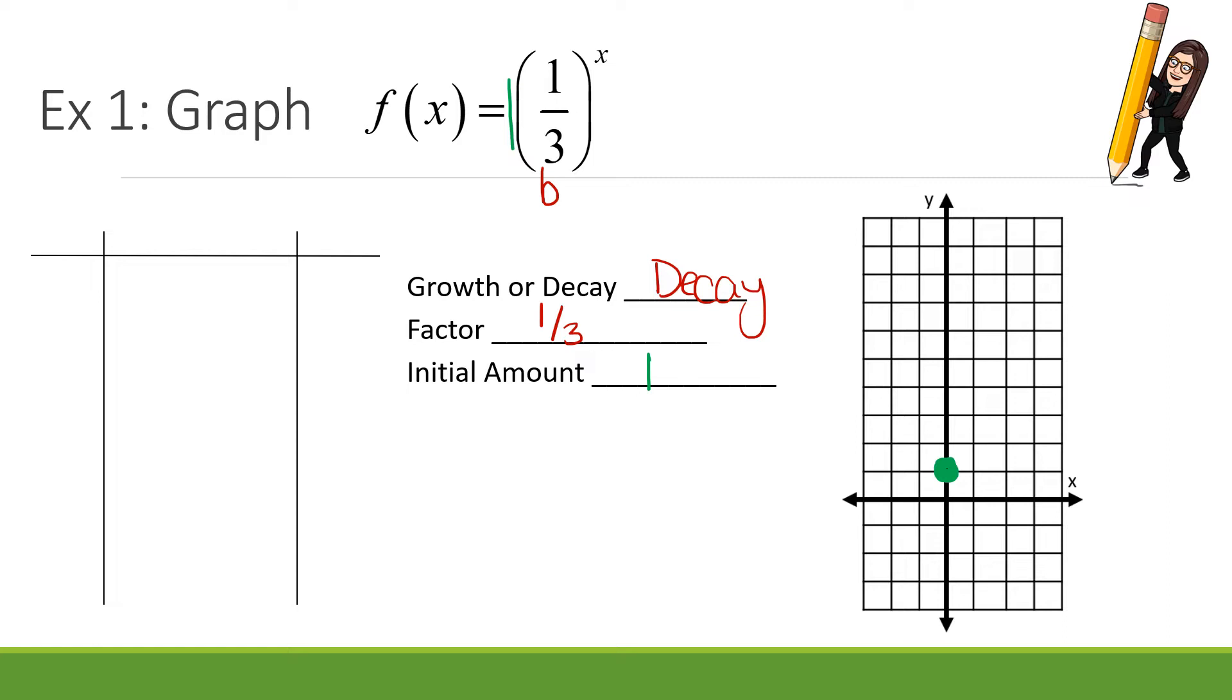Now let's talk about this table. We are going to use the same 5 x values we used when graphing lines. We're going to replace x in our function with these values and calculate. For example, I'm going to start with 0 because 0 is easier. If I have 1 third, but I'm placing it to the 0 power, what's anything with the 0 power? 1. Anything with the 0 power is 1. And look at that, we already graphed that dot 0 comma 1. So you actually don't have to show me any work for the 0 if you understand how the initial amount works.